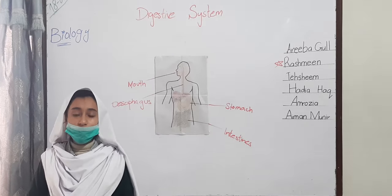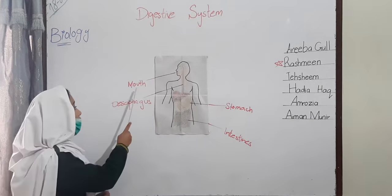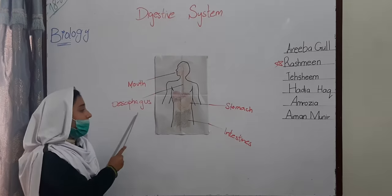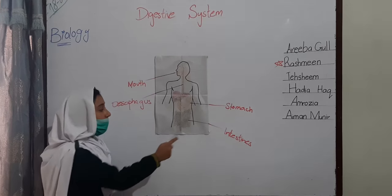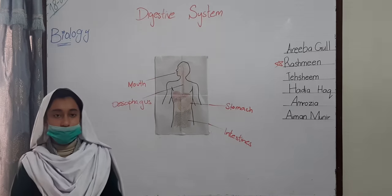There are five parts of the digestive system: mouth, esophagus, stomach, small intestine, and large intestine.